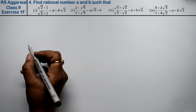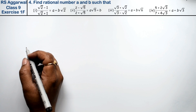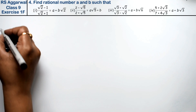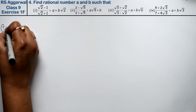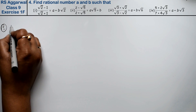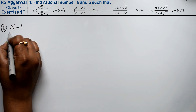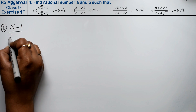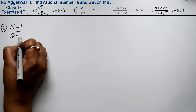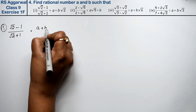Let's do question number 4 of Exercise 1F, Number System. Question number 4 is: find rational numbers A and B such that — first part — root 2 minus 1 upon root 2 plus 1 equals A plus B root 2.